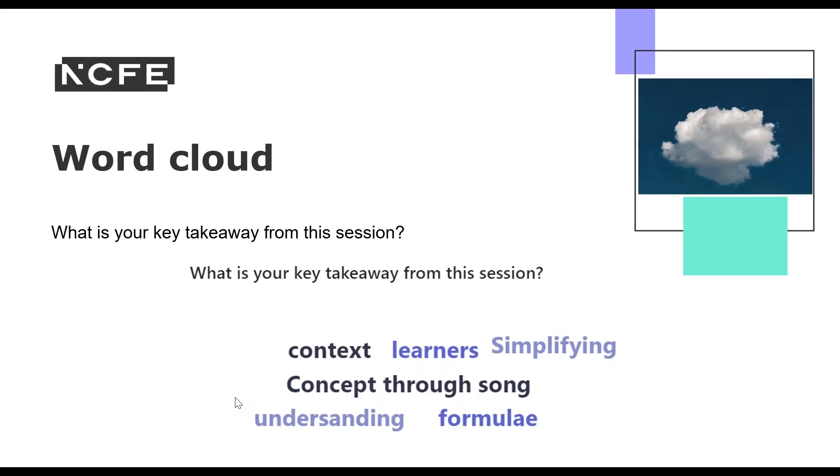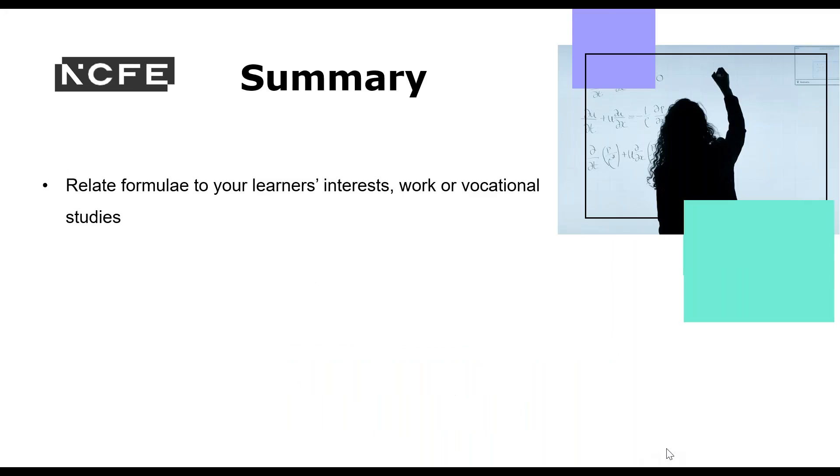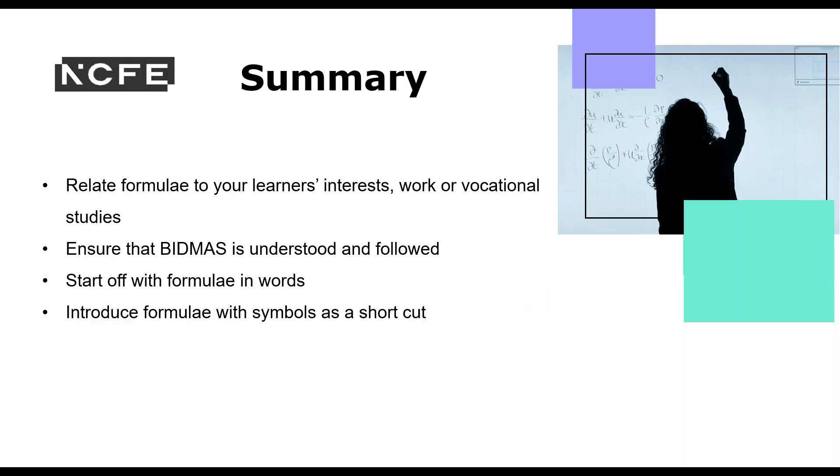In summary, we asked for the key takeaway from the session. We got looking at concept through song. Simplifying, putting it, giving a context so that learners understand it better. So you can have a little think about what you've got from this recording. But in summary, try to relate the formula to your learners interests, their work or vocational studies. Ensure that BIDMAS is understood and followed, but also make sure your learners understand how they can sometimes do little shortcuts. Start off with formulae in words. That can help with understanding. Introduce formulae with symbols as a shortcut.